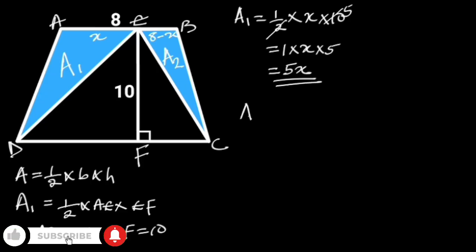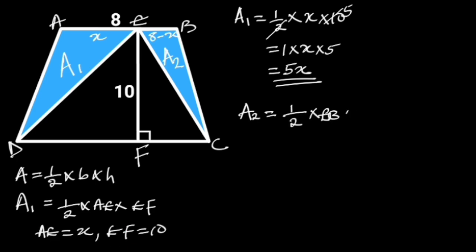The area of Triangle EBC is equal to 1 over 2 times EB times EF. EB is equal to 8 minus X, EF is equal to 10.